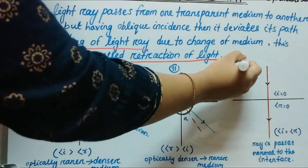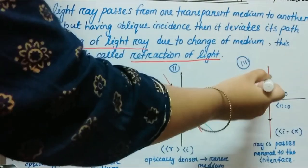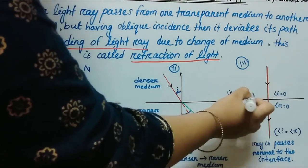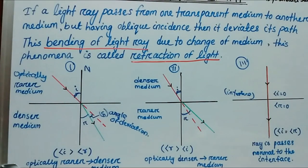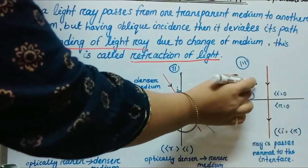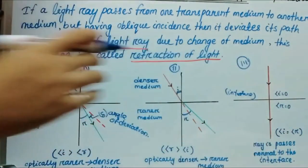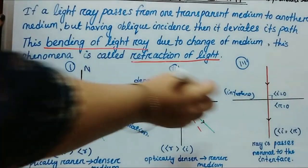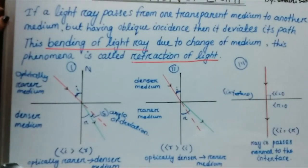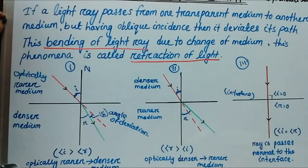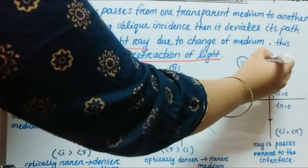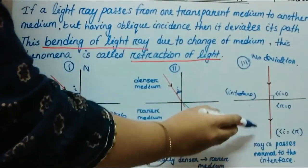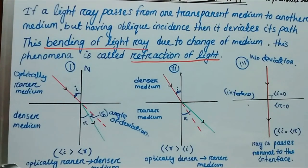Case 3: when a light ray passes normal — that is, perpendicular — to the interface. The interface is the imaginary line which separates two media. When light is perpendicular to the interface, the angle of incidence equals 0 and the angle of refraction is also 0. That means i equals r, and there is no deviation. When a light ray passes normal to the interface, no deviation occurs.